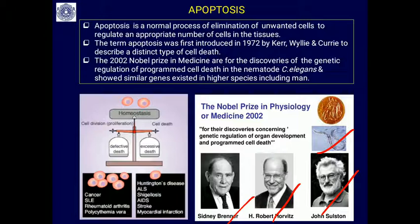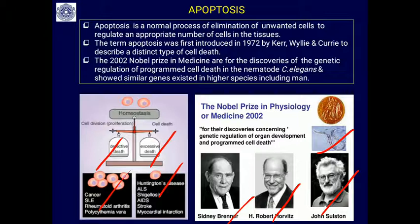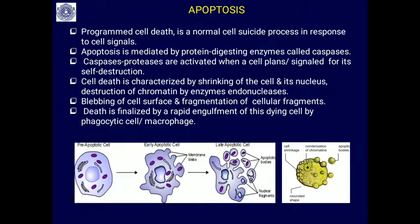The importance of their discovery relates to maintaining apoptotic homeostasis: if there is no apoptosis, that leads to cancer; if there is excessive apoptosis, that leads to pathological conditions such as Huntington's disease. In AIDS, HIV exploits the same mechanism. Proper homeostasis is essential — apoptosis is a normal cell suicide process in response to cell signals.